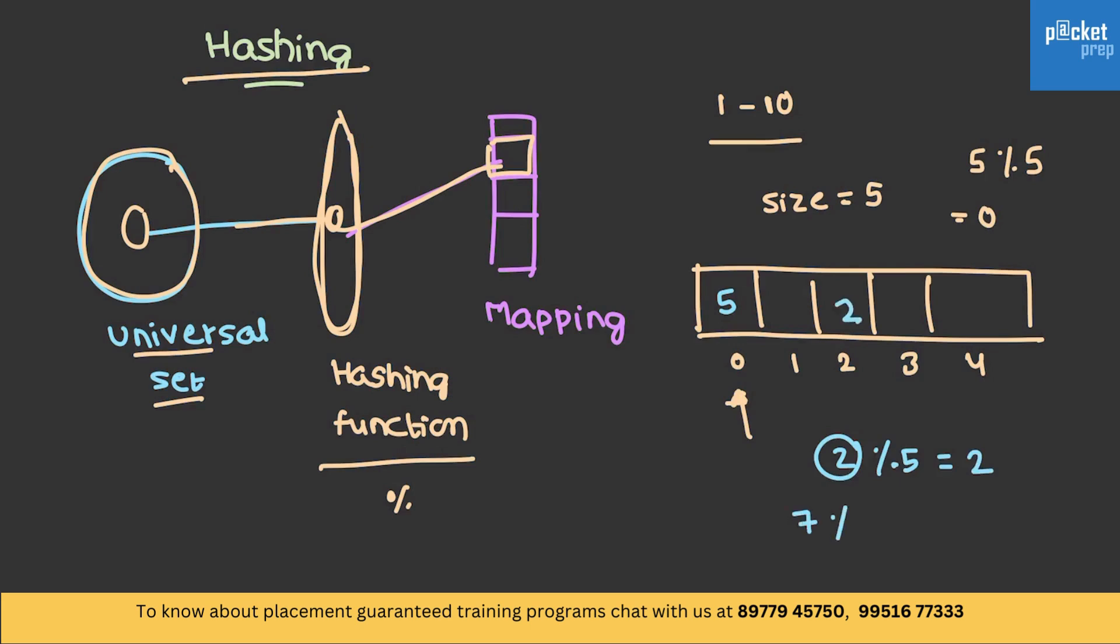If I get 7, 7 modulo 5 will be 2. So, 7 even has to enter here. But, it is already occupied by 2. And in this case, we call it as collision.